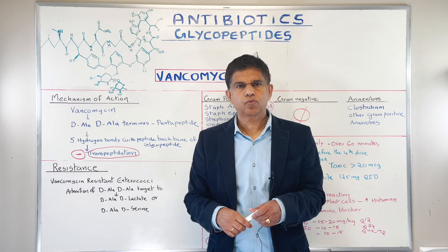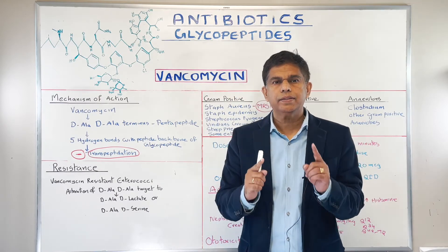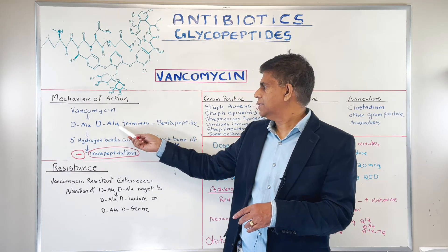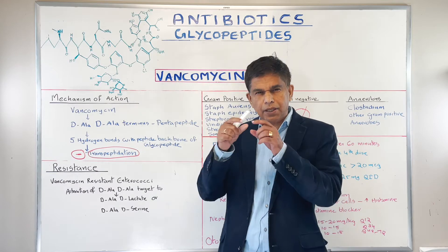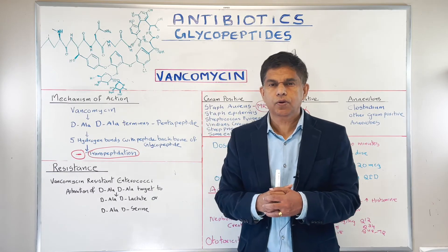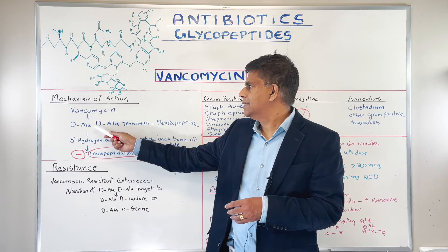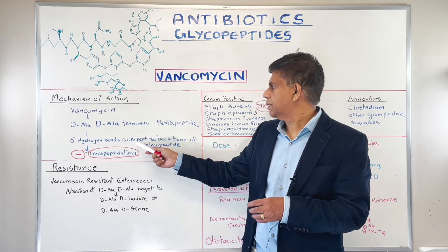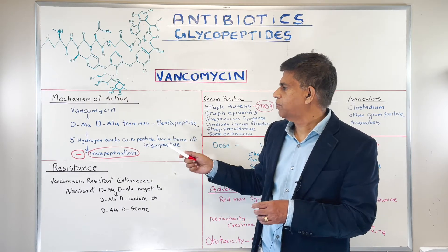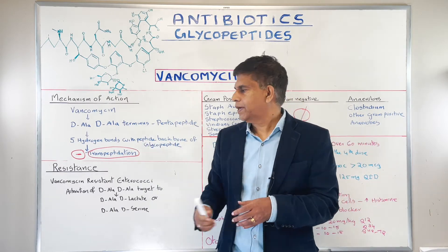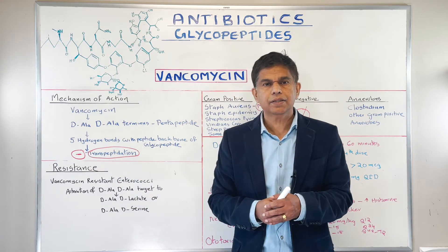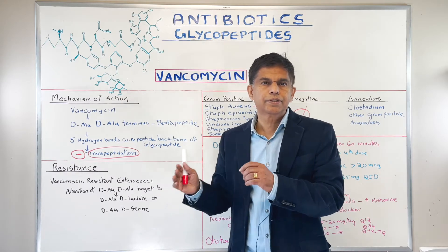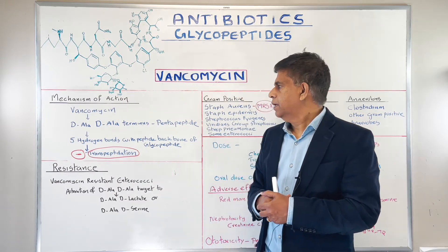The first thing we need to look at is the mechanism of action — how does vancomycin work? Bacteria have this D-alanine D-alanine terminus at the pentapeptide — that's the last terminal portion. Vancomycin binds with this D-alanine D-alanine and forms five hydrogen bonds with the peptide backbone of the glycopeptide. This prevents transpeptidation, which is important for peptidoglycan synthesis, a critical part of the bacterial cell wall.